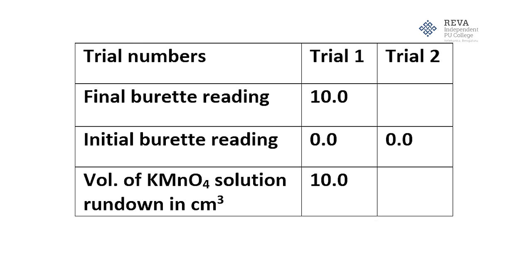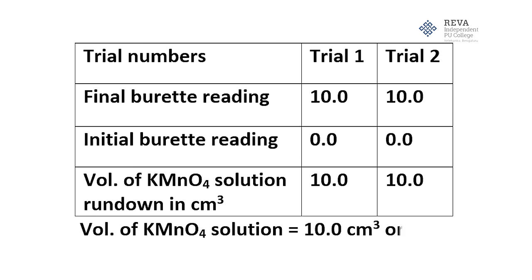After conducting an experiment, we are going to enter the readings. Thus, after entering we can find the volume of KMnO₄ is found to be 10 cm³. That is a concordant value. The values are the same, so that is called as concordant values.